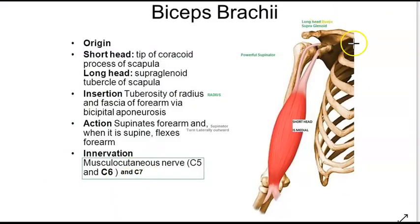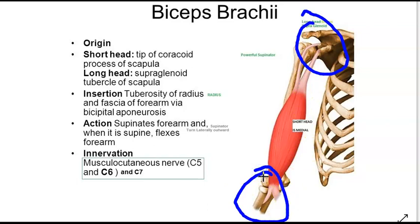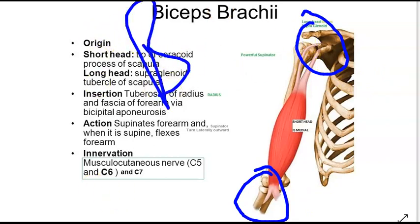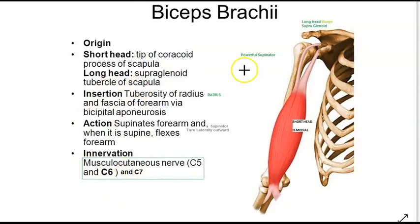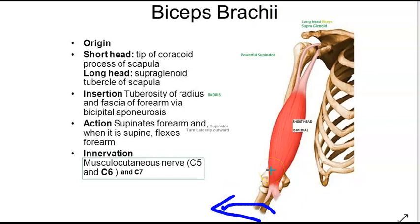Looking at biceps brachii: the origin has two heads — a short head and a long head. It inserts at the tuberosity of the radius and the fascia of the forearm via the bicipital aponeurosis — so two insertions and two origins, which is why it is called biceps. The action is supination: it supinates the forearm first, then flexes it.